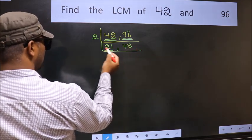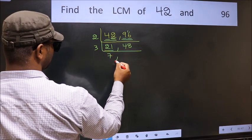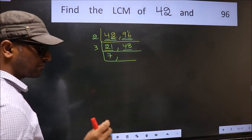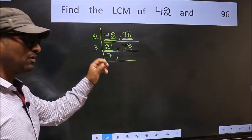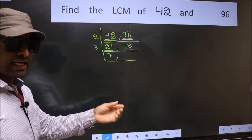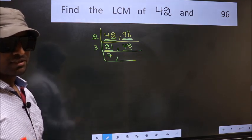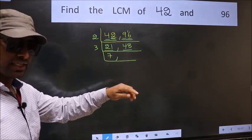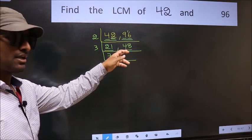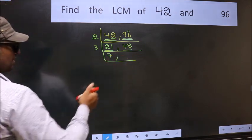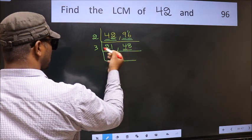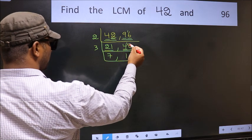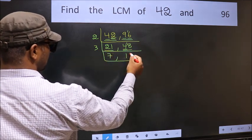Now here we have 21. 21 is 3 sevens, 21. The other number is 48. To check whether 48 is divisible by 3, we add the digits: 4 plus 8 is 12. Is 12 divisible by 3? Yes, so this number is also divisible by 3. First number 4: a number close to 4 in the 3 table is 3 ones are 3. 4 minus 3 is 1, carried forward — 18. When do we get 18 in the 3 table? 3 sixes are 18.